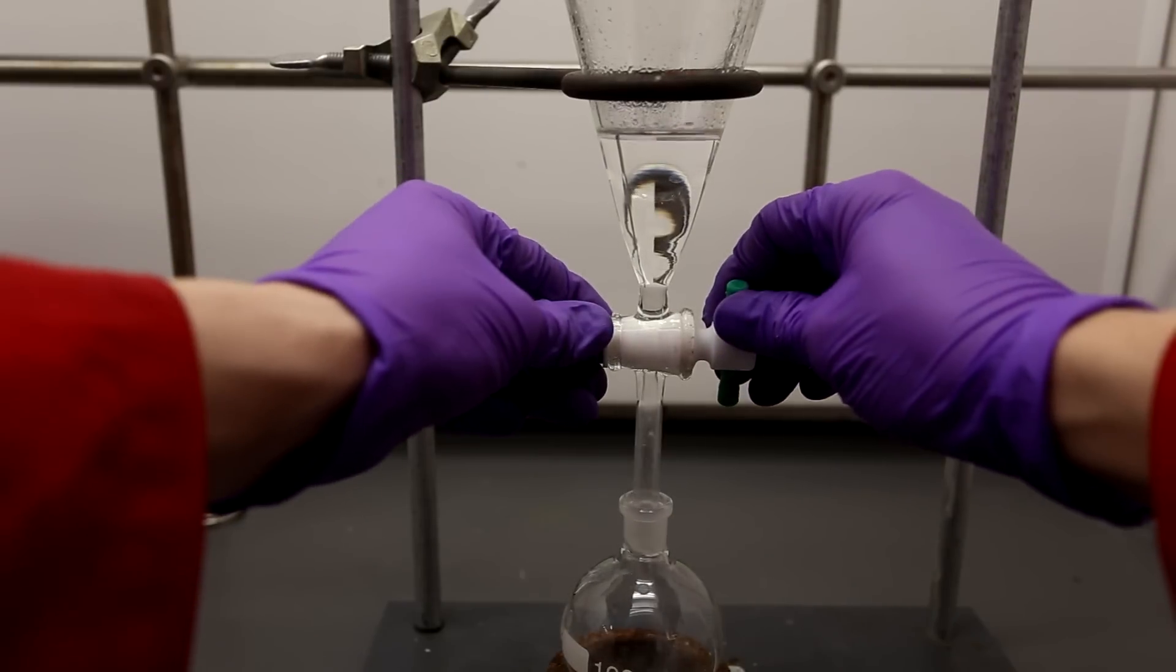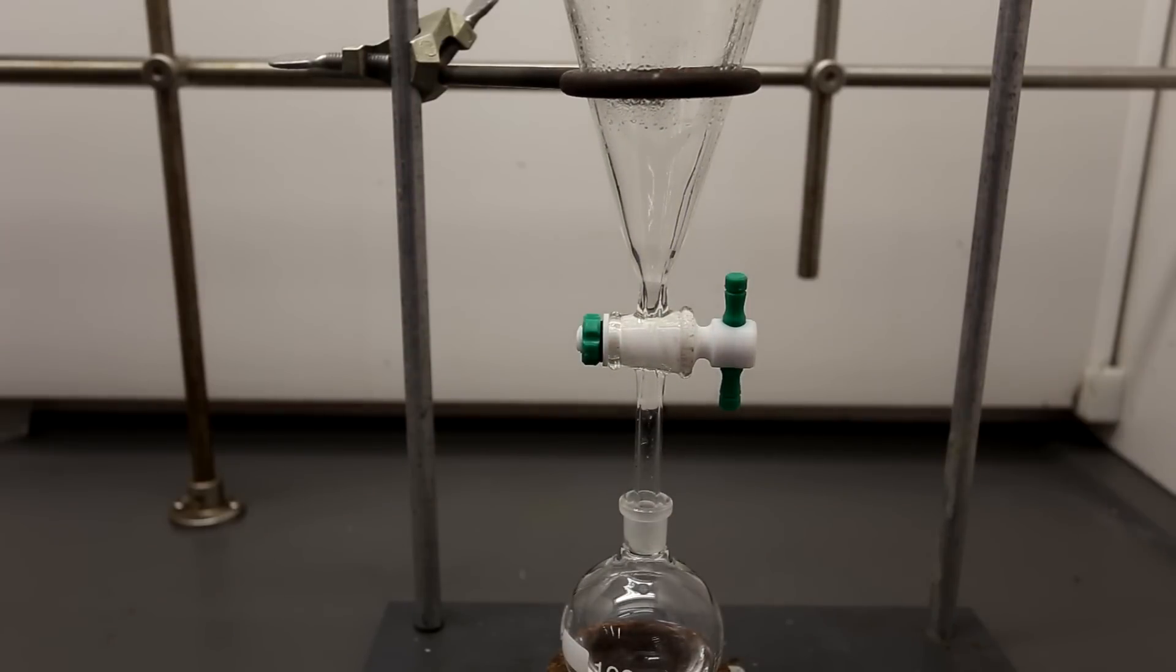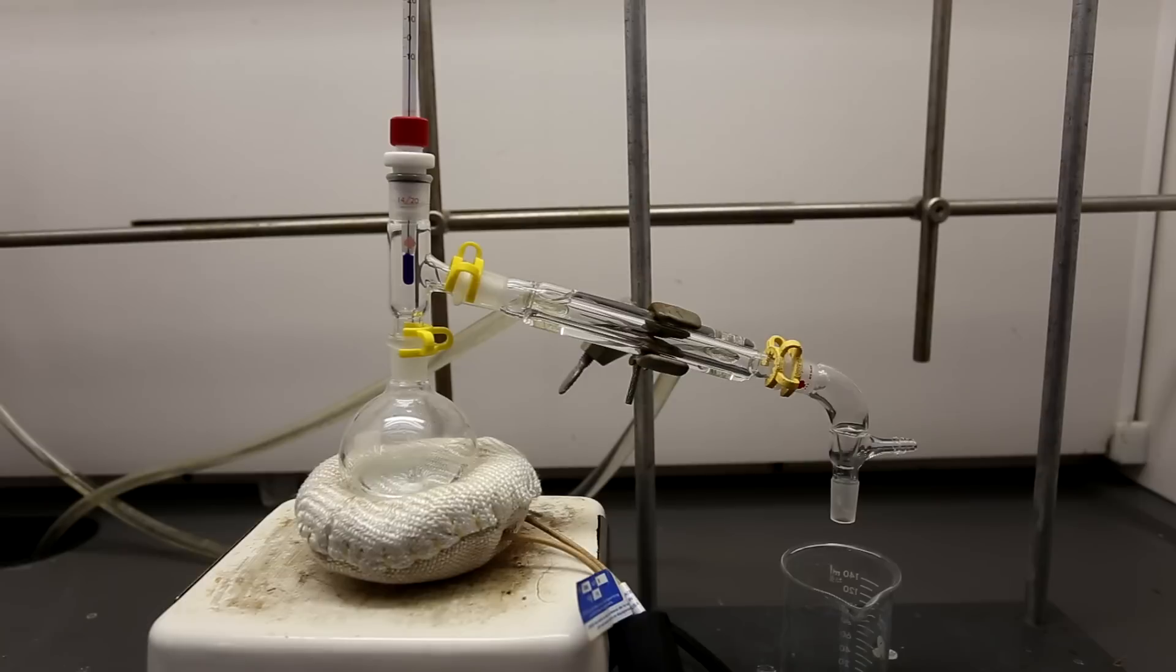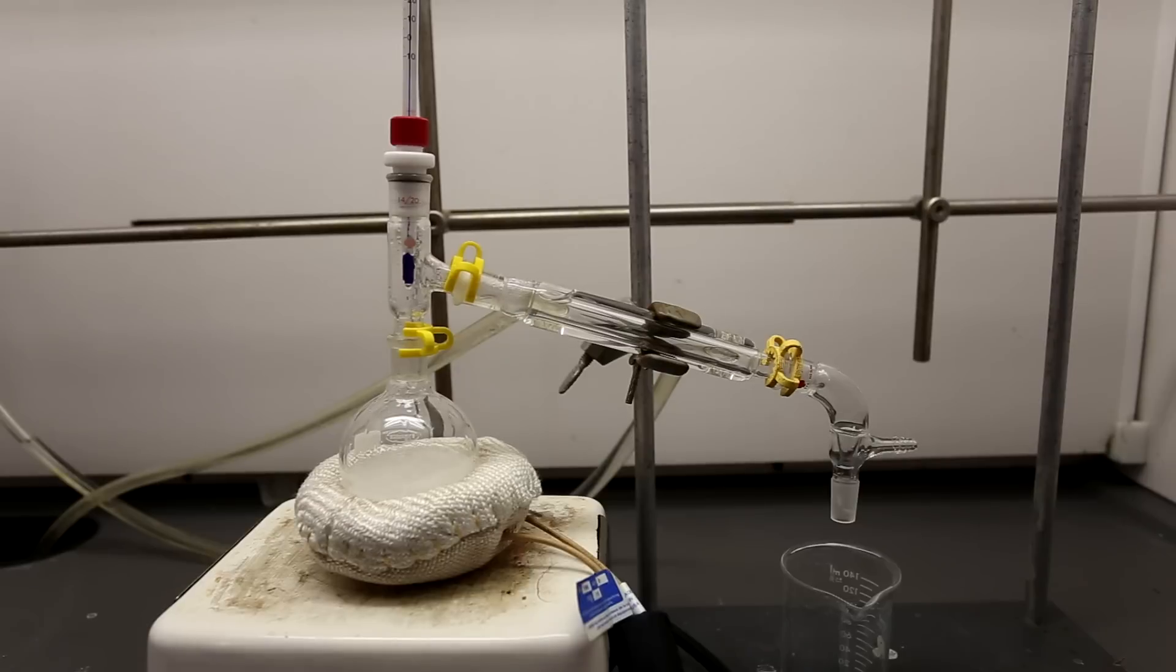The pentyl acetate was then drained into a 100 milliliter round bottom flask. A distillation apparatus is then set up. Pentyl acetate boils at 149°C, so everything that came over below this temperature was collected in the beaker and discarded.